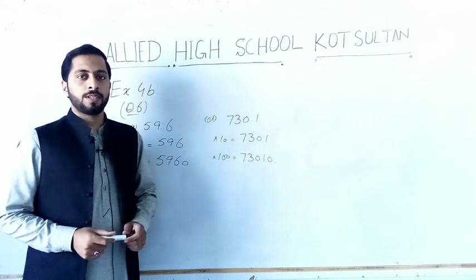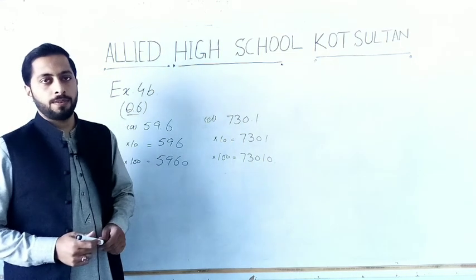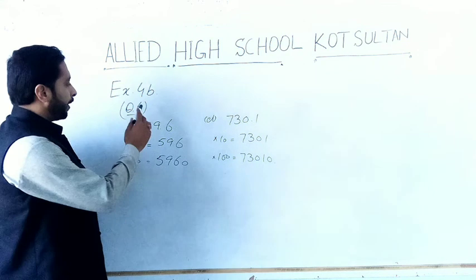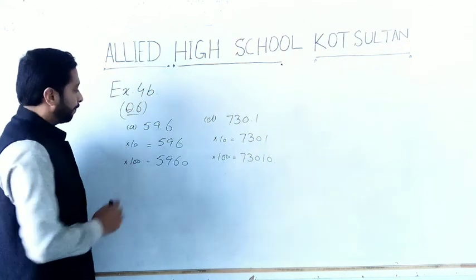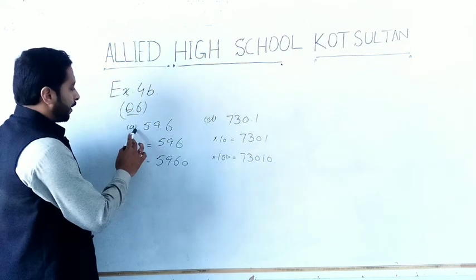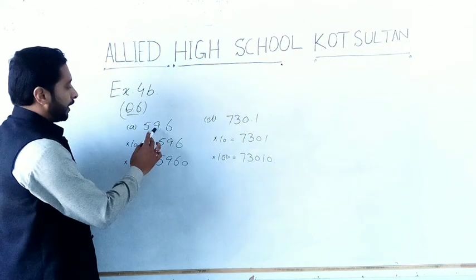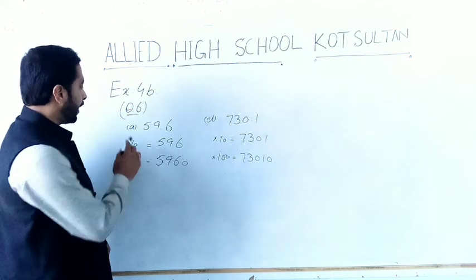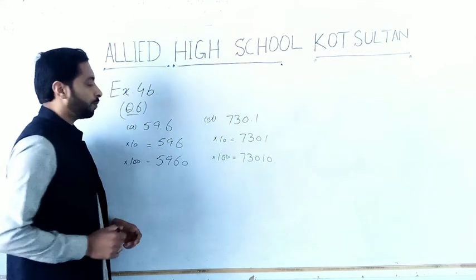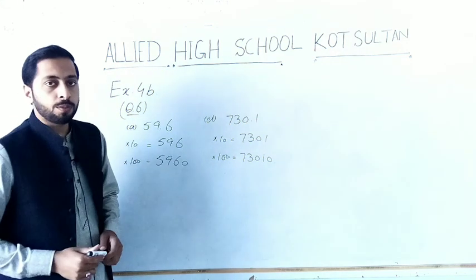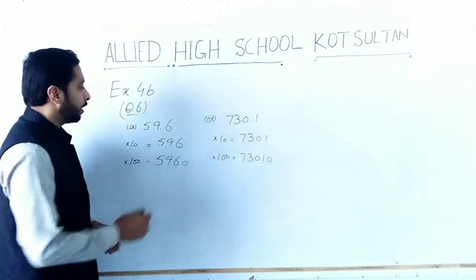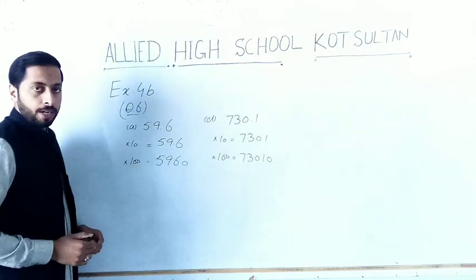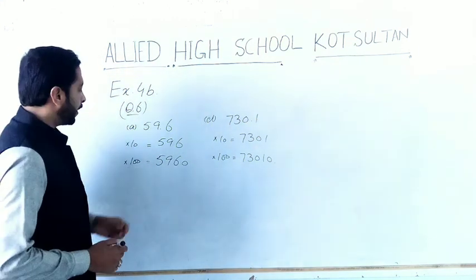Dear students, our last question of exercise 4B is question number six. Part A is 59.6. We have to multiply this amount by 10 and by 100.